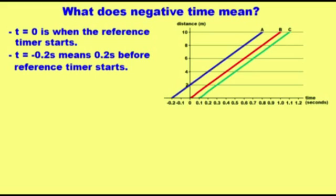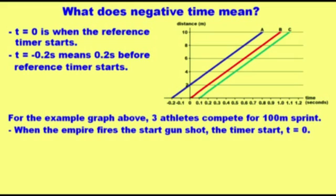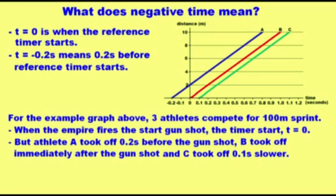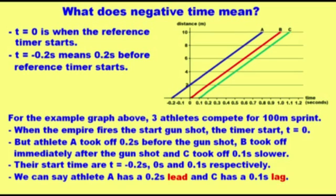On the x-axis, T equal to 0 is when the reference timer starts. Negative time means time before the reference timer starts. For example, T equal to minus 0.2 seconds means 0.2 seconds before the reference timer starts. In this example graph, three runners compete in a 100m sprint. When the umpire fires a gunshot, the timer starts at T equal to 0. Runner A took off 0.2 seconds before the gunshot, runner B took off immediately after, and runner C took off 0.1 seconds later. So runner A has a 0.2 second lead, and runner C has a 0.1 second lag.